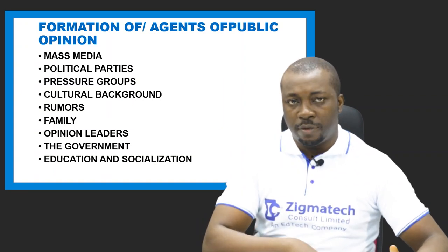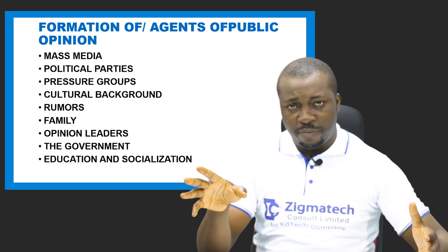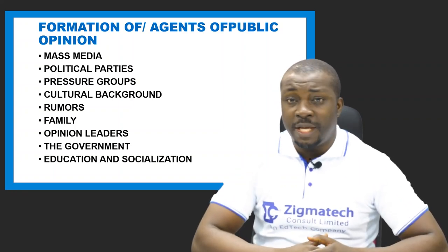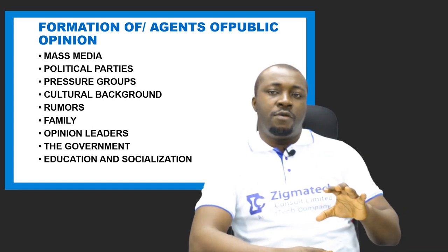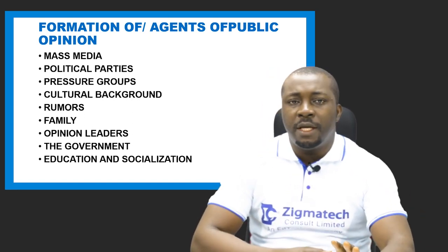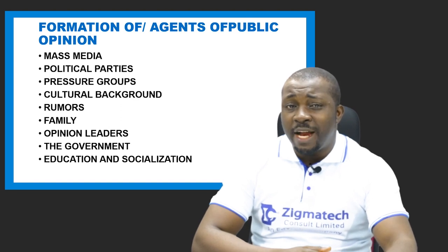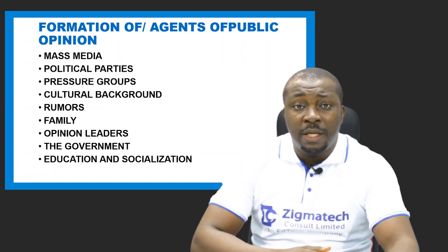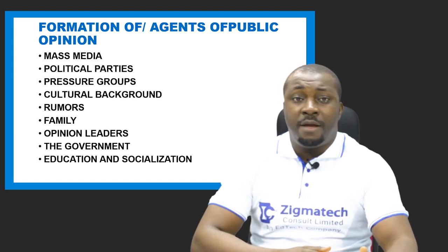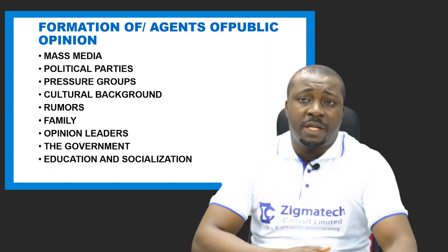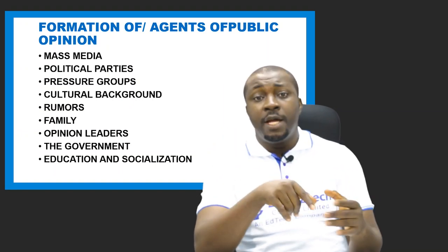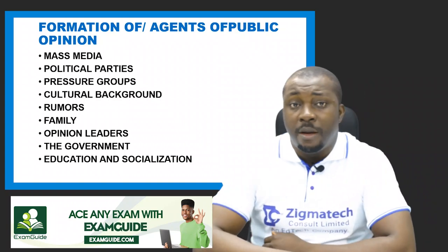Number three is pressure groups — organized groups or interest groups that aim to influence government policy in the interest of their members. Pressure groups educate the public on issues affecting their members through seminars and press conferences. They protest and make people aware of their views on particular matters, gaining public sympathy. They help to inform and shape the opinions of the public, especially their members, towards public issues.